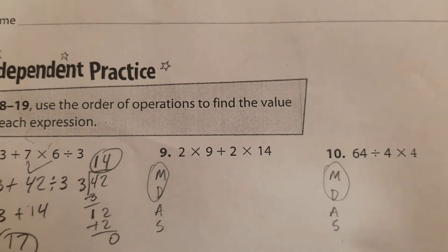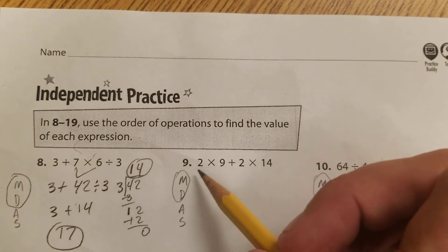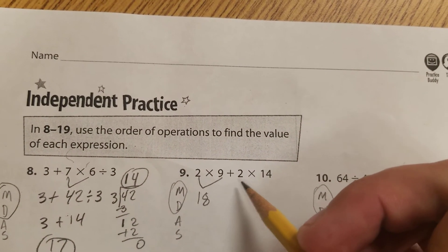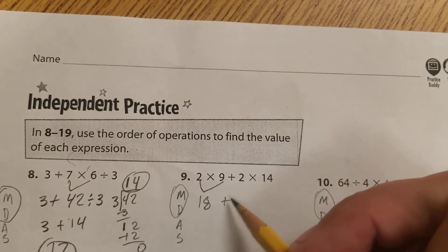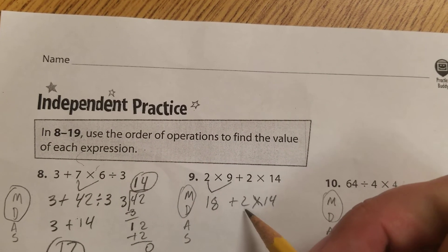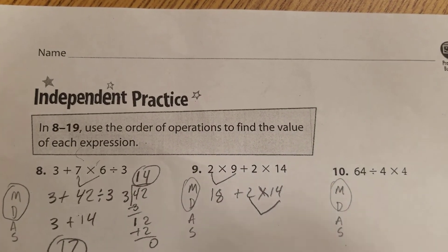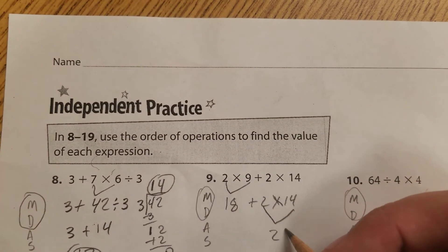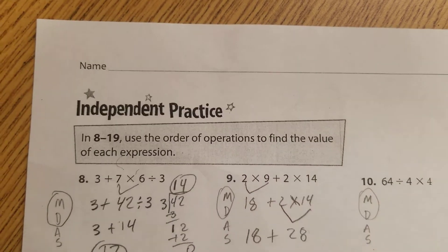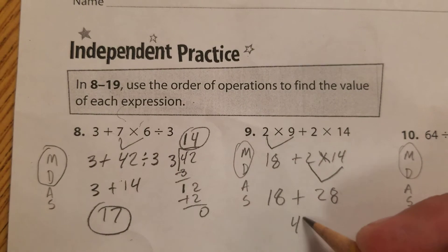For this next one, our first multiplication left to right is 2 times 9, which is 18. And then we have plus 2 times 14. We have to do 14 times 2 next because that's multiplication — 14 times 2 is 28. So we're left with 28 plus 18, which is 46.